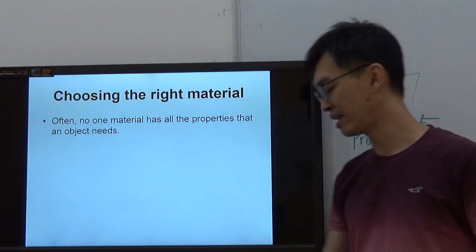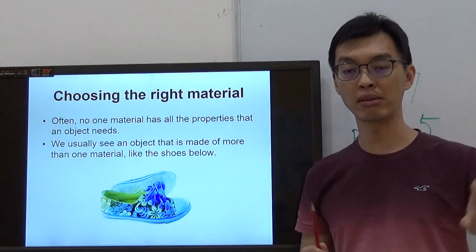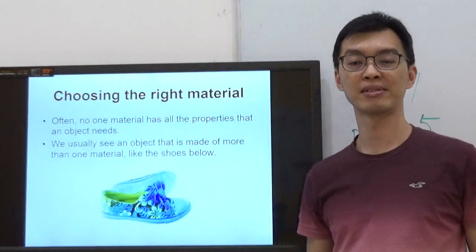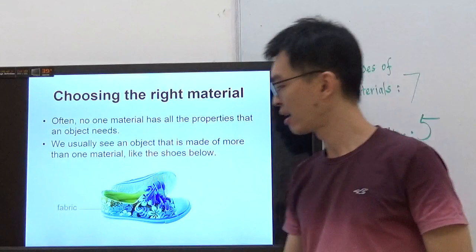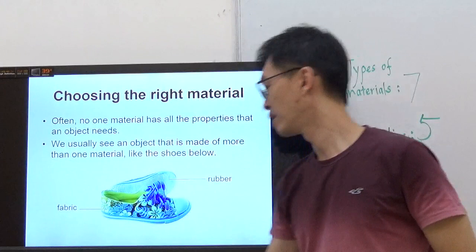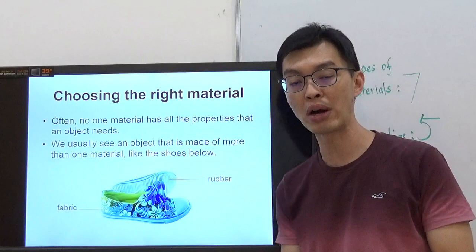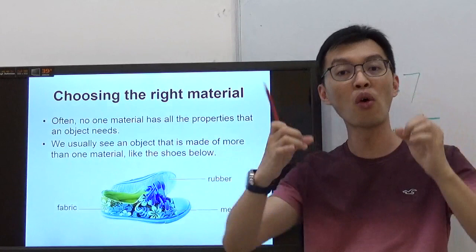Often, no one material has all the properties that an object needs. We usually see an object made of more than one material, like the shoes below. In every part of that object, like your school bag or even your pen, they don't just use one material, they use multiple materials. This shoe is made out of fabric because I want it to be soft. The soles of the shoe are made of rubber because I want them to have more friction so I don't slip and fall. Sometimes there are metal rings to hold the shoelace together so you can walk comfortably.